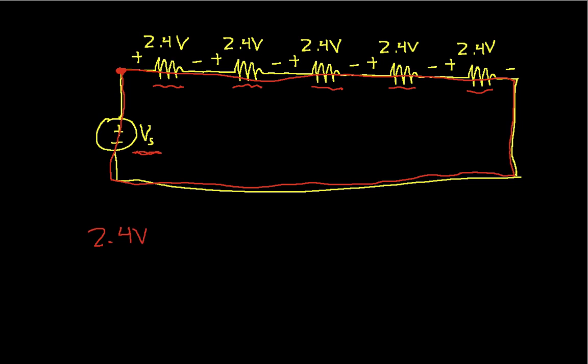Plus another 2.4, plus a third 2.4, plus a fourth 2.4, plus a fifth 2.4. And then I have a minus Vs, that's negative, because I'm going from a lower potential to a higher potential in the source. And this is all equal to zero.